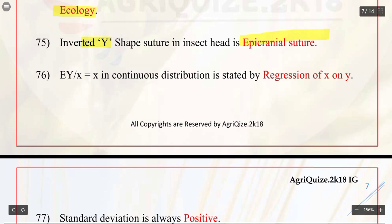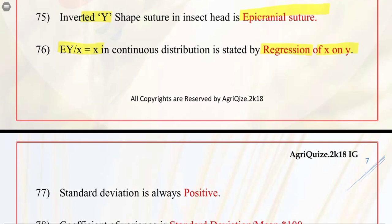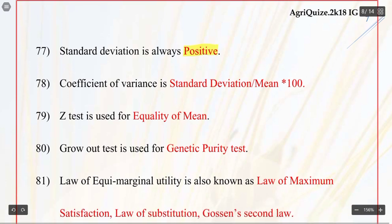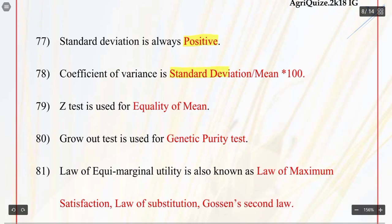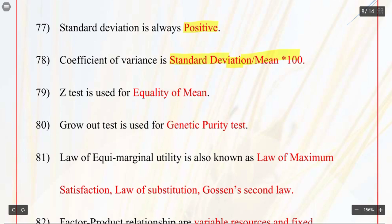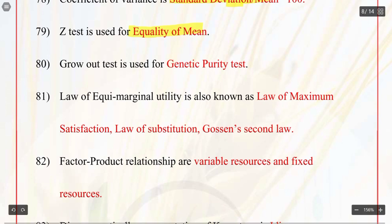Q76. E(y|x) = x in continuous distribution is stated by regression of x on y. Q77. Standard deviation is always positive. Q78. Coefficient of variance is standard deviation divided by mean, multiplied by 100. Q79. Z test is used for equality of mean. Q80. Grow out test is used for genetic purity test.